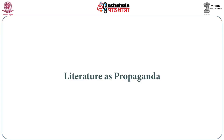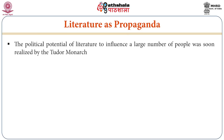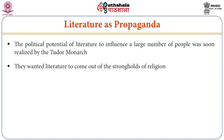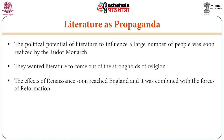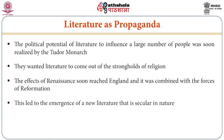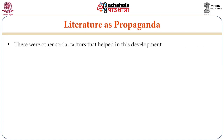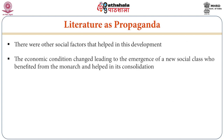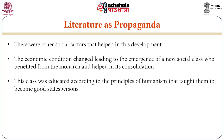Let us first discuss about literature as propaganda. The political potential of literature to influence a large number of people was soon realized by the Tudor monarchs. They wanted literature to come out of the strongholds of religion. The effects of the Renaissance soon reached England and it was combined with the forces of the Reformation. This led to the emergence of a new literature that is secular in nature. The economic condition changed, leading to the emergence of a new social class who benefited from the monarch and helped in its consolidation. This class was educated according to the principles of humanism that taught them to become good statespersons.